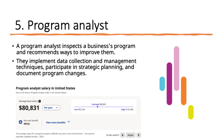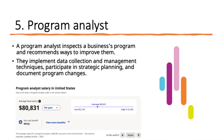The fifth and final type is the Program Analyst. Think of it this way: a project is a single effort, a portfolio groups projects together, and a program combines portfolios. Program analysts inspect business programs and recommend ways to improve them — not just individual projects but the whole program. They implement data collection and management techniques, participate in strategic planning, and document program changes. Based on 1,800 salary responses on Indeed.com, the average is about $81,000 a year, with the highest at $125,000 and the lowest at $52,000.